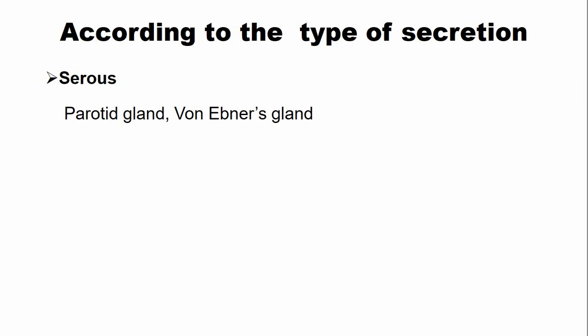The salivary glands are also classified according to the type of secretion. The first type is serous glands, which produce more watery saliva. This saliva is rich in amylase, proteins, proline-rich proteins, and glycoproteins.